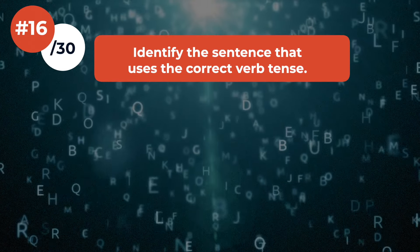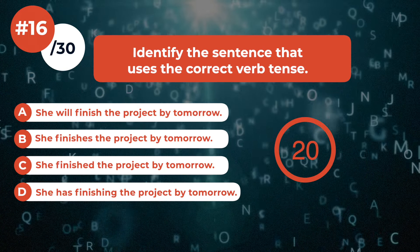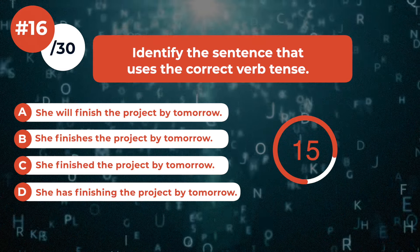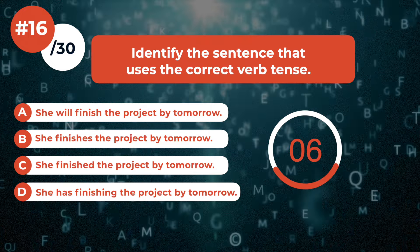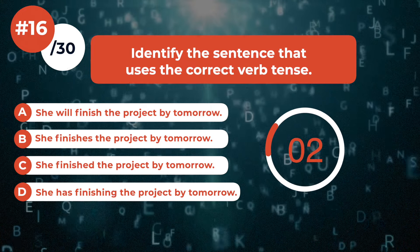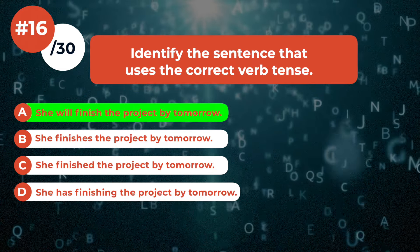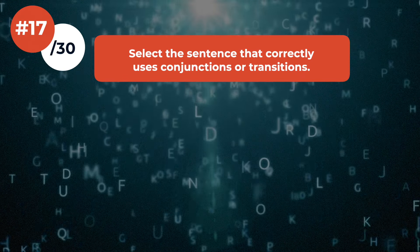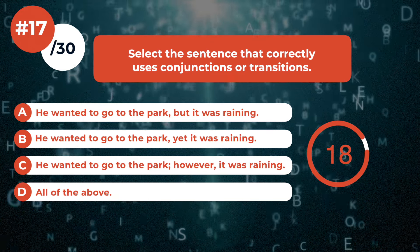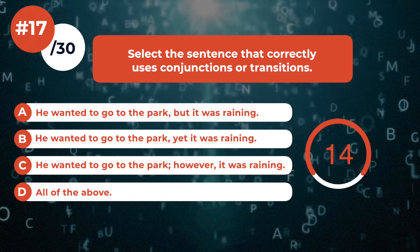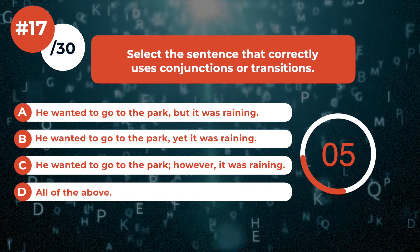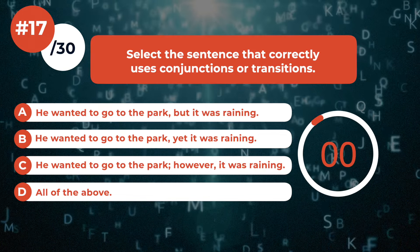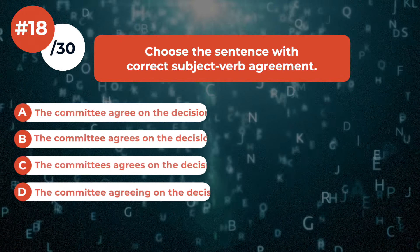Verb tenses are crucial — identify the sentence with the correct verb tense. Conjunctions and transitions are up next — select the correctly used sentence.